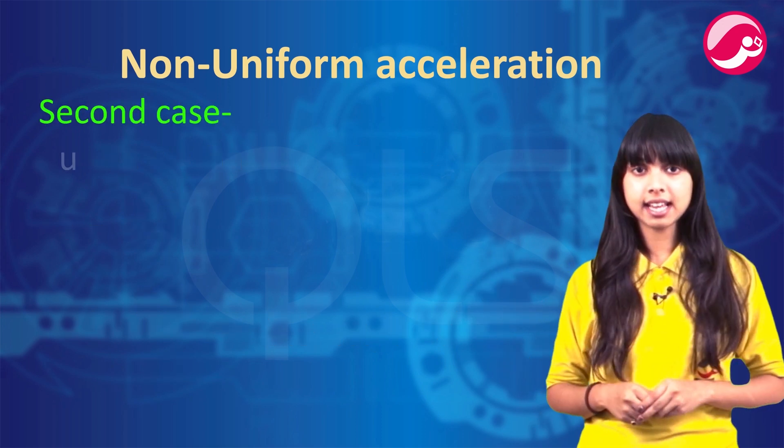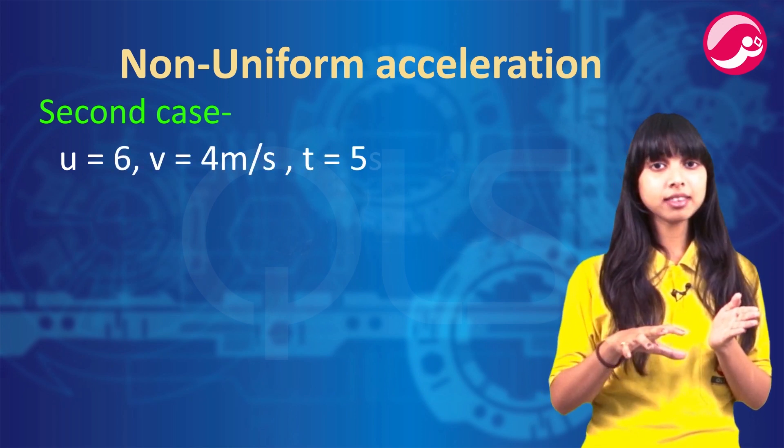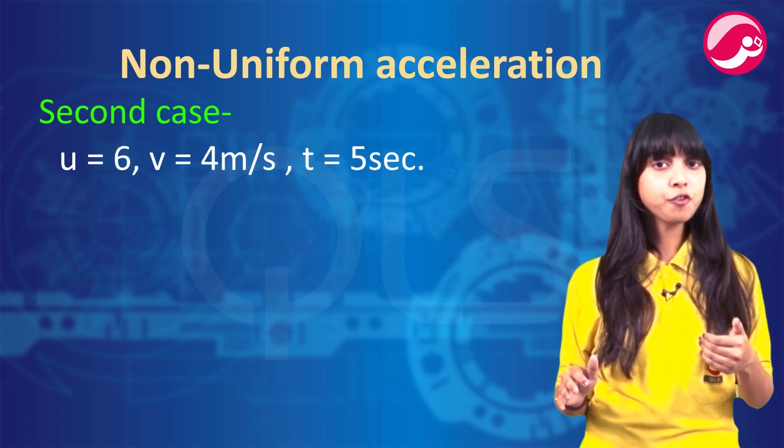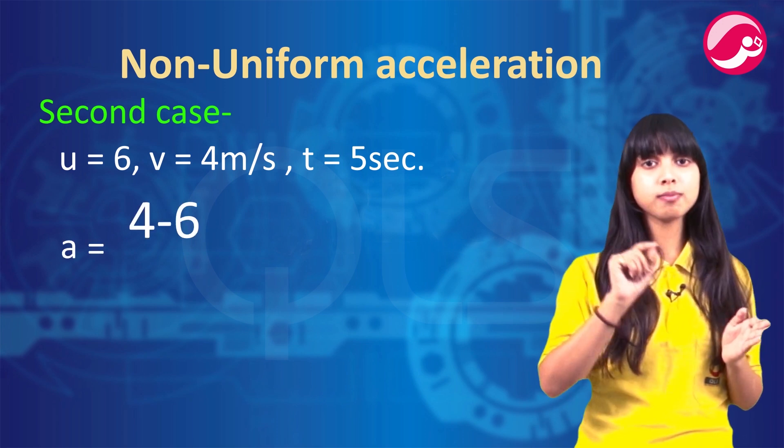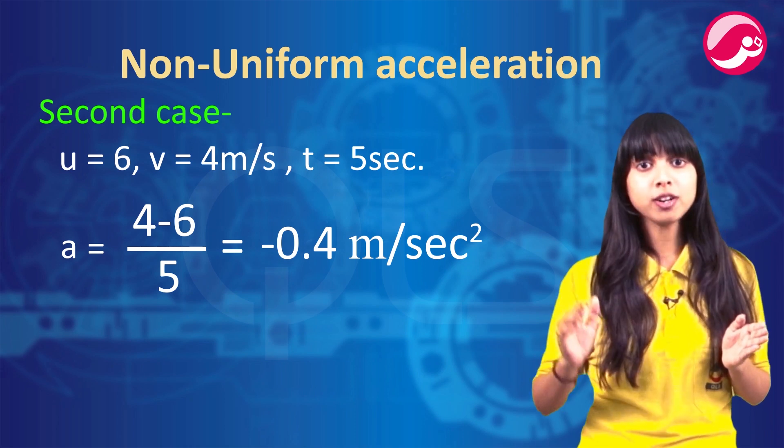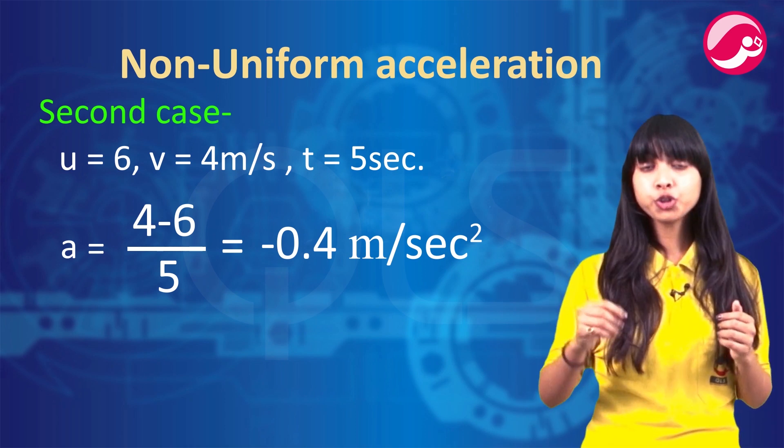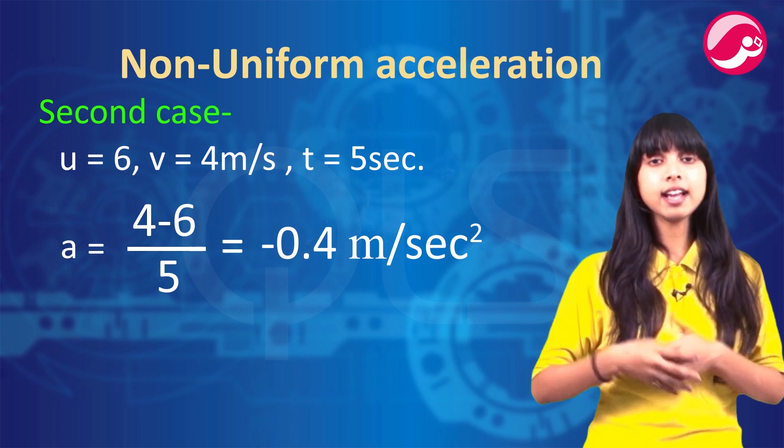Now in the second case, u equals 6, v equals 4, and time taken was 5. Putting the formula, a equals 4 minus 6 upon 5. The answer will be minus 0.4 meter per second square. Minus 0.4 because he is applying brakes.